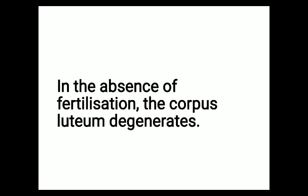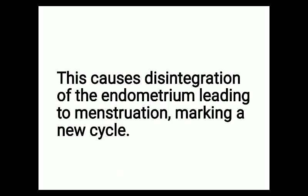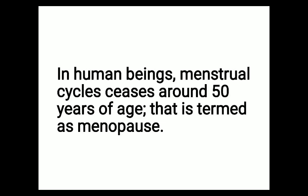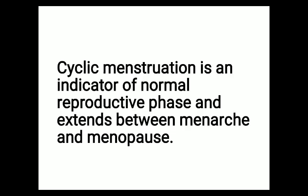In the absence of fertilization, the corpus luteum degenerates, which causes disintegration of the endometrium leading to menstruation and marking a new cycle. In human beings, the menstrual cycle stops around 50 years of age, which is termed menopause. Cyclic menstruation is an indicator of the normal reproductive phase and extends between menarche and menopause.